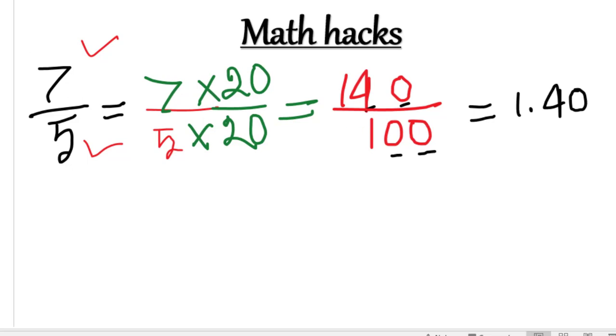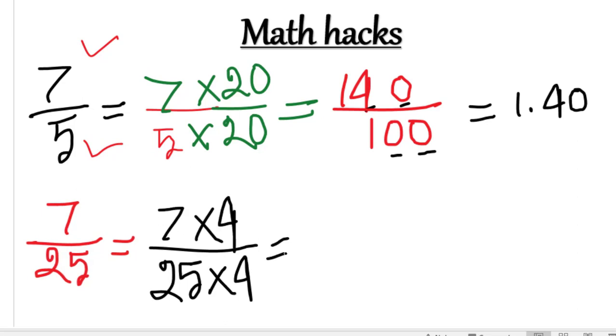Let me show you another example: 7 over 25. How do we think about this? We multiply 25 by 4 to get 100 in the denominator. So 25 into 4, and therefore 7 into 4. 7 times 4 equals 28, so we get 28 over 100.